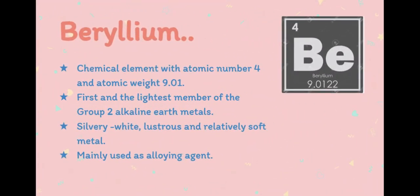Beryllium is the fourth element in the periodic table and found among Group 2 alkaline earth metals. It is silvery white, lustrous, and relatively soft metal, mainly used as an alloying agent.